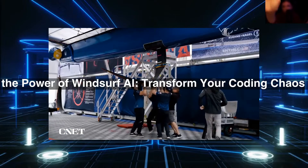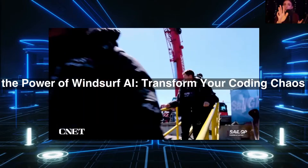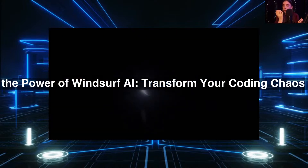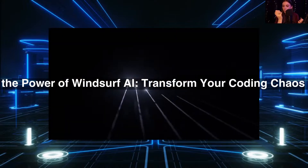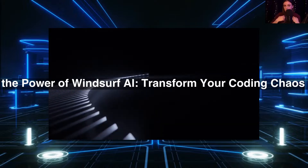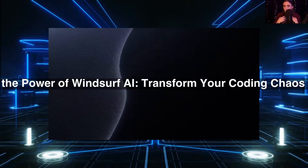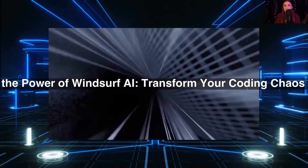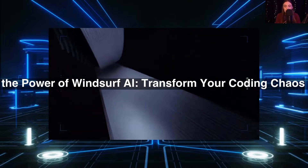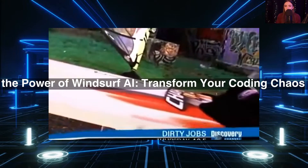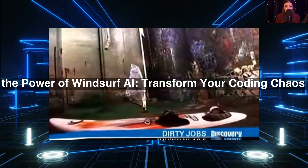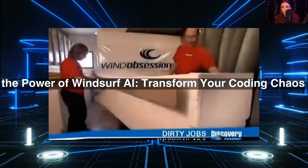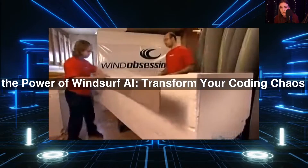Then there's Cascade Modes. You've got Write Mode and Chat Mode, and each one has its own best uses. Write Mode is great for diving deep into code, while Chat Mode is perfect for brainstorming or troubleshooting with your AI. Understanding when to switch between these modes can really make a difference in your workflow.